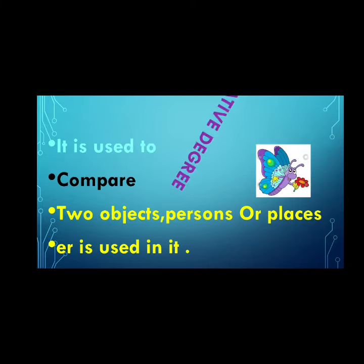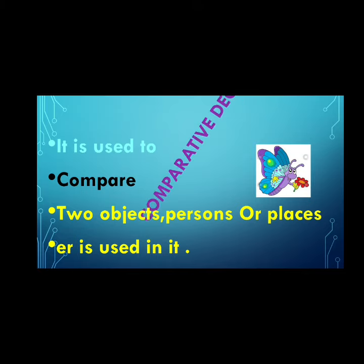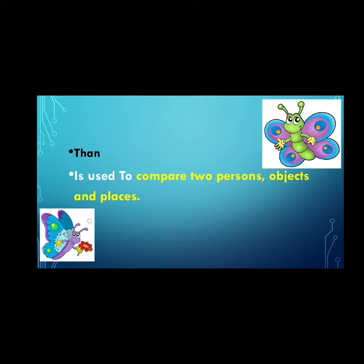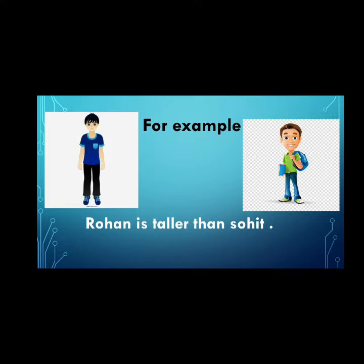Next is comparative degree. It compares two persons, places, or objects, and 'er' is used in it. 'Than' is used to compare two persons, objects, and places. In this picture, there are two boys and a comparison between these two. Rohan is taller than Sohit.